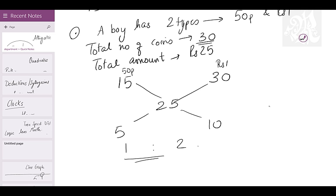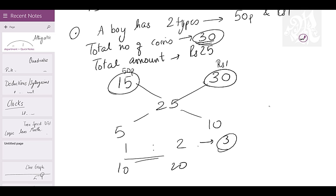1 to 2 is basically 3 parts. With 30 coins in 3 parts, that's 10 per part — so 10 coins of 50 paisa and 20 coins of 1 rupee. If you have all 50 paisa coins you make 15 rupees; all 1 rupee coins gives 30 rupees; the mix gives 25 rupees. Then you allocate. Simple, convenient — a very brilliant way of calculating.